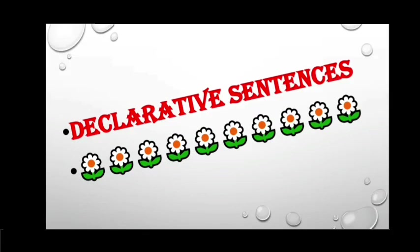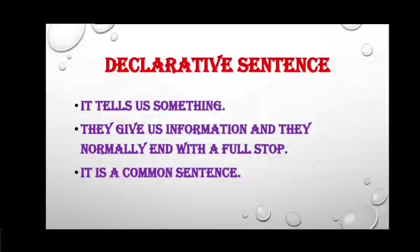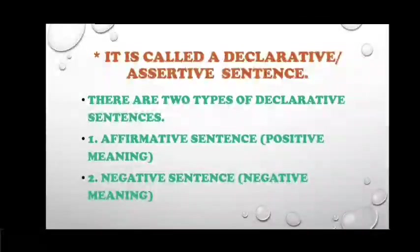Declarative sentences: a declarative sentence tells us something. They give us information and they normally end with a full stop. It is a common sentence. The declarative sentence is of two types: first one is affirmative sentence, which means positive; and second one is negative sentence, which consists of negative meaning.